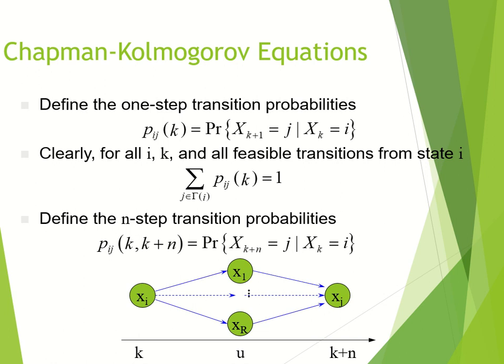I'm going to talk about the Chapman-Kolmogorov equations, which aren't as complicated as they seem. You already know the one-step transition probabilities, and this is the probability of going from state i to state j, given that you move one step forward.